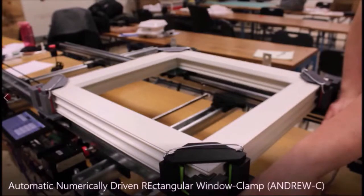We call this the automatic, numerically-driven, rectangular window clamp, or Andrew C for short. The rails and hardware are locally sourced, so if required, new links can be bought to customize the machine for the company's future needs.